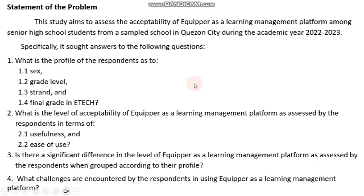For statement of the problem number two: what is the level of acceptability of Equiper as a learning management platform assessed in terms of usefulness and ease of use? So, we have two main variables — usefulness and ease of use — but we do not know yet how many indicators we will be using in the coding process. For SOP number three, it's a test of difference, so we could not identify any variable necessary for the coding. And for our last variable, we have the challenges encountered by the respondents, so we have one variable, which is the challenges.